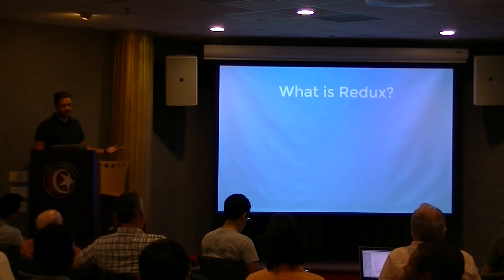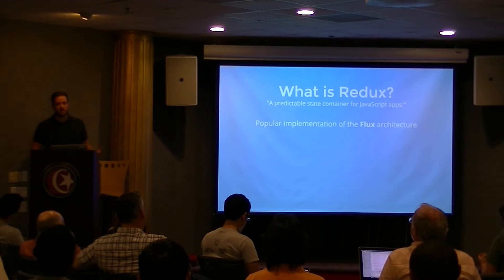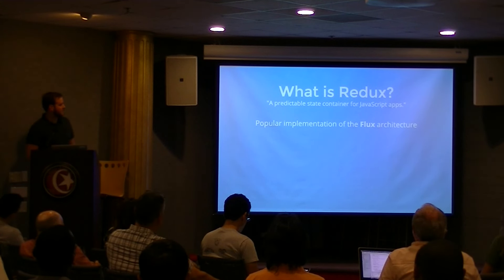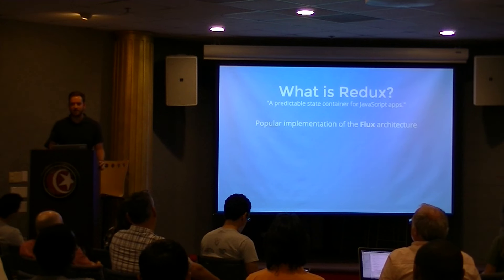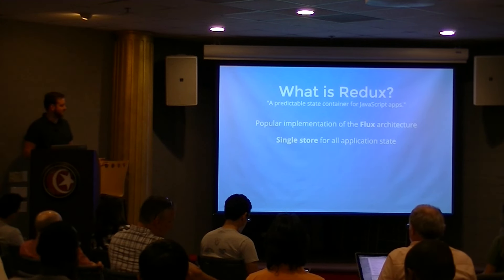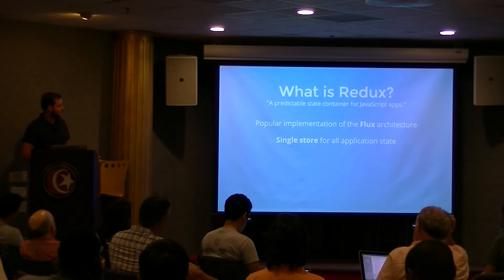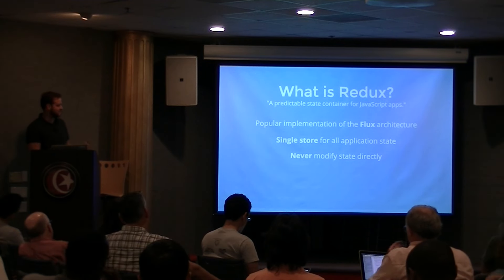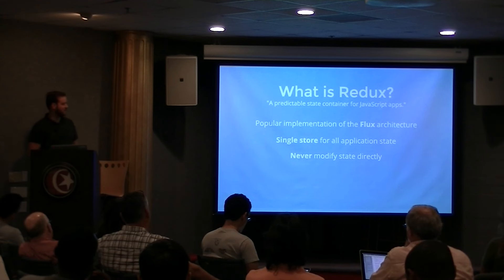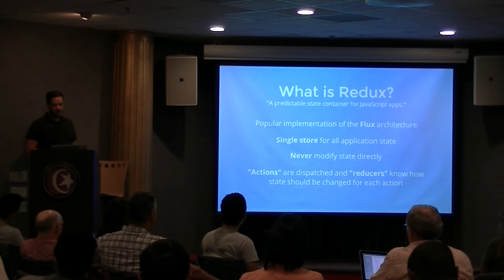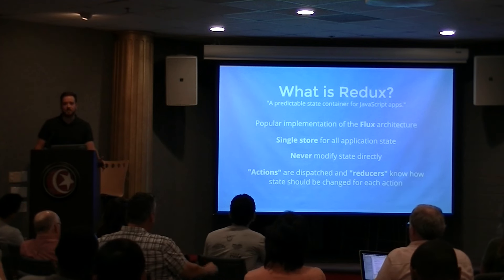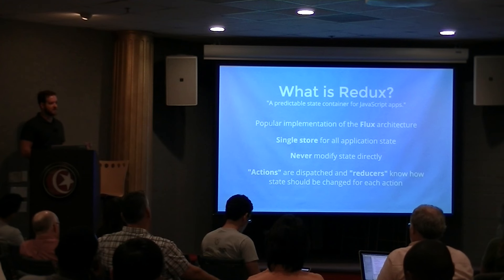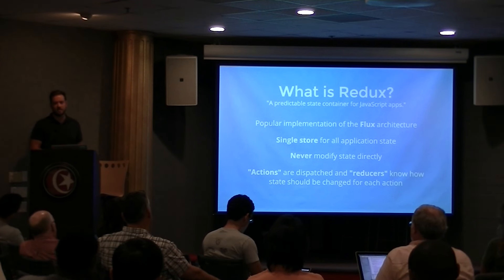Redux is basically a popular implementation of the Flux architecture. The creator calls it a predictable state container for JavaScript apps. It has a single store for all application state — some Flux implementations have multiple stores, but Redux has just one. You never modify state directly. Actions are dispatched and reducers are pure functions that know how to mutate state based on the action that's dispatched.